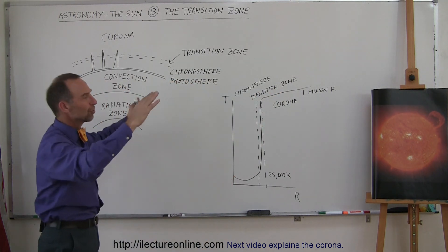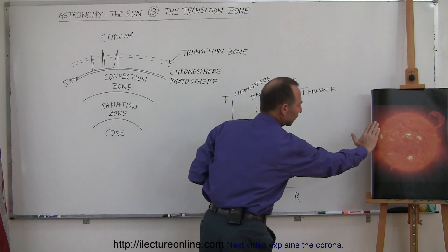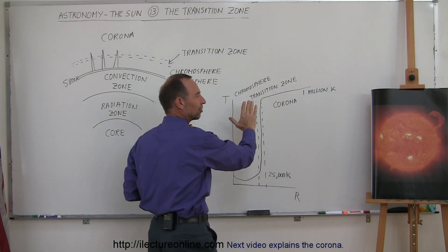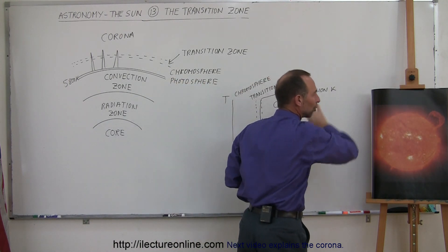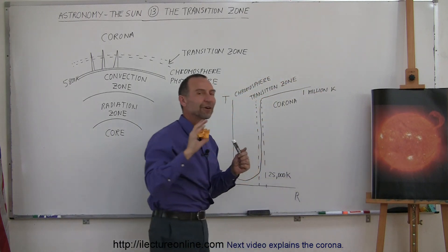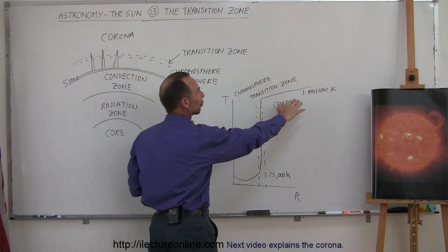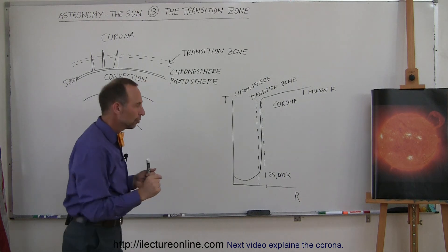The corona is a vast region around the sun that goes out for several million kilometers past the sun, engulfing the sun in an enormous, vast region of very rarefied gas that reaches temperatures of 1 to 2 million Kelvin.